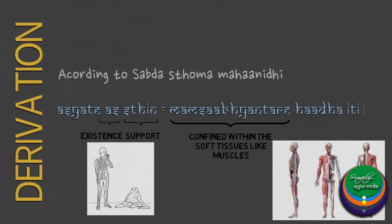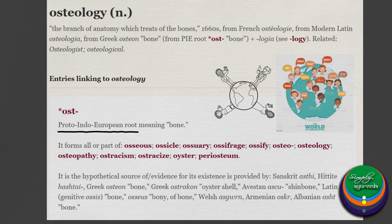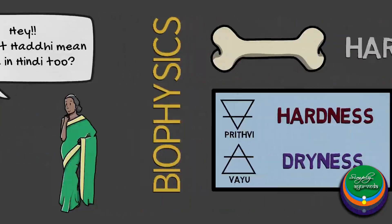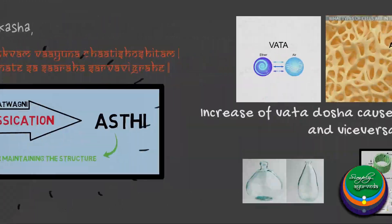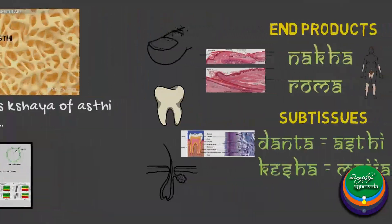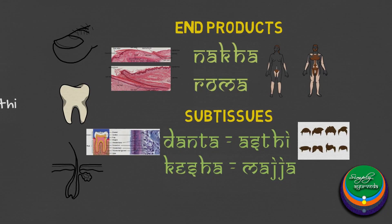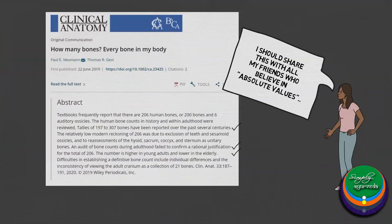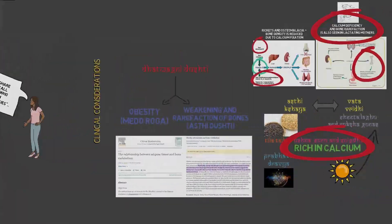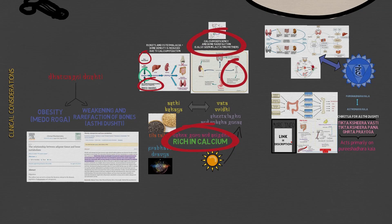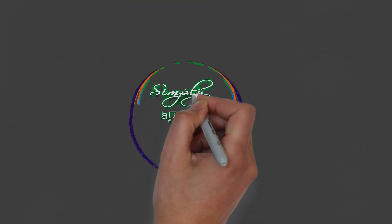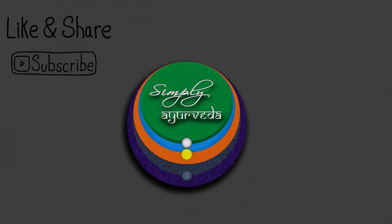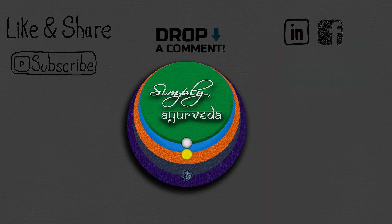With this, let us run through what we have learnt in this video. We looked into the derivations of the term Asthi and its similarities in etymology with words for bones in other languages. Then we understood the process of formation of Asthi, its relationship with Vata Dosha, and the Upadhatu and Mala of Asthi. We looked into the various definitions of Asthi, understood its classification, skimmed through its enumeration and the reasons for variance. Finally, we explored how Asthisharira is relevant clinically even in present times. If you liked this video, hit the like button and comment with your opinions. Consider supporting us by subscribing to our channel and following us on Instagram and Facebook.